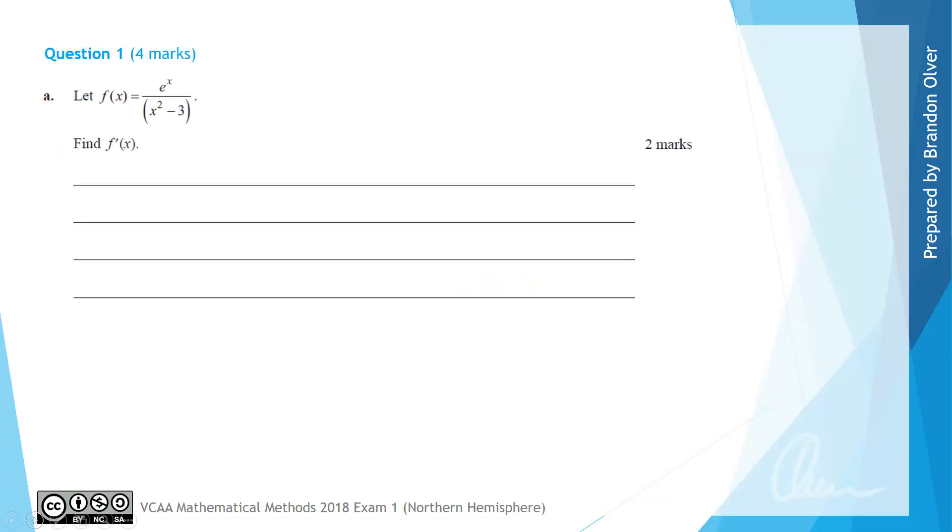For part A we have let f(x) equal e^x divided by x^2 minus 3, and we're asked to find f'(x), which is the derivative. So because we have a function dividing another function, we can use the quotient rule for differentiation.